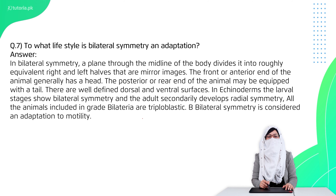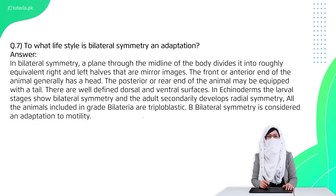Question 7 is: to what lifestyle is bilateral symmetry adapted? In bilateral symmetry, the body is not repeated on all sides, so there is space for multiple organ systems. These animals are mostly adapted for walking, moving, and an active lifestyle.